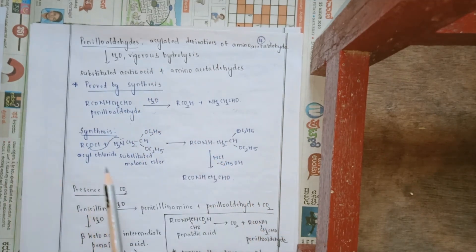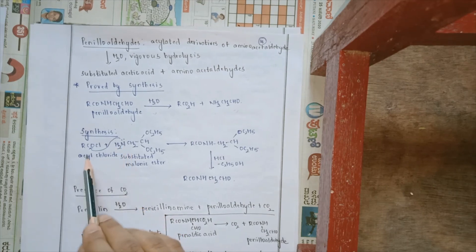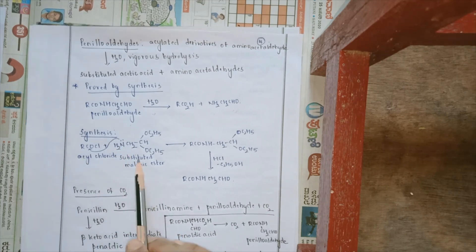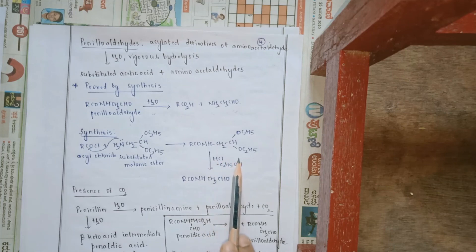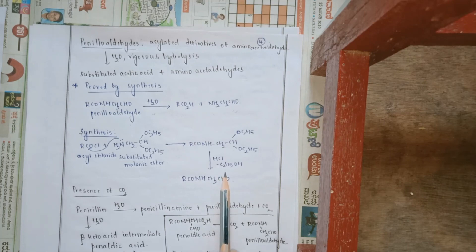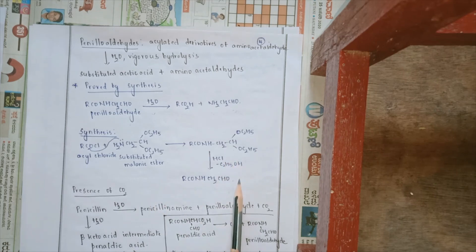Peniloaldehyde has to be proved by its synthesis. When an acyl chloride reacts with a substituted malonic ester, the lone pair of electrons on nitrogen attacks the carbonyl carbon. The malonic ester attacks the carbonyl carbon to give a substituted intermediate, which when reacted with HCl gives two molecules of ethanol, so that peniloaldehyde is synthesized.